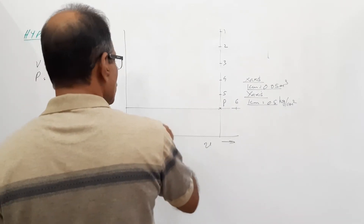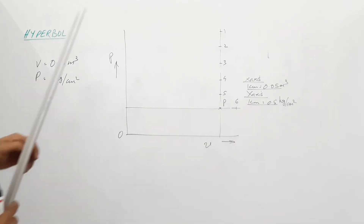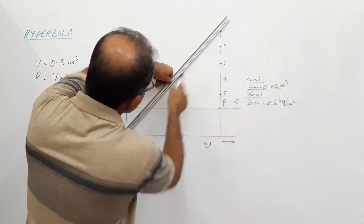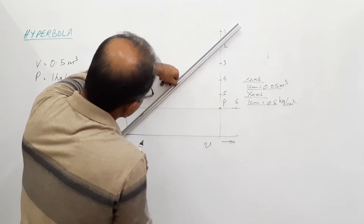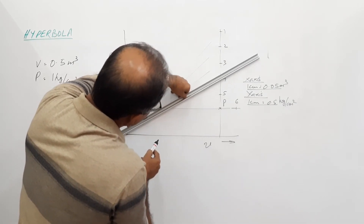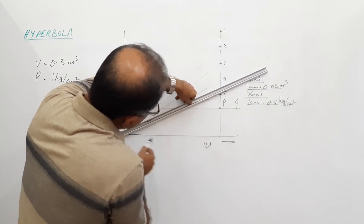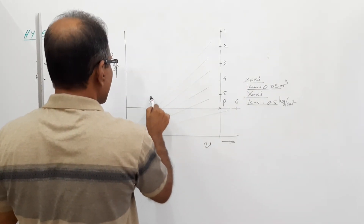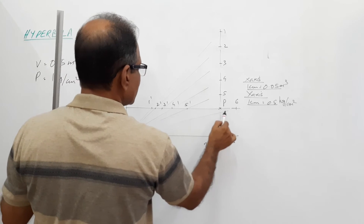I join these points to the origin — 1, 1; 2, 1; 2, 2; 3, 3 — constructing the hyperbola by intersecting the lines from the X-axis and Y-axis divisions to locate successive points on the Boyle's law curve.